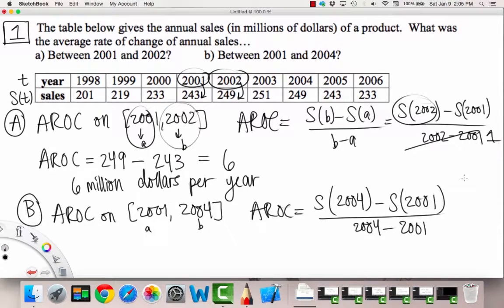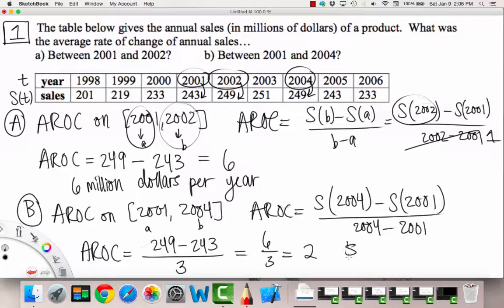So now we're going to reference our table for the top values. So S of 2004 is 249. So no new number there. But anyways, 249 minus, and then 2001 is still 243. That was the sales then. And then over, but this is a little different. 2004 minus 2001 is a three. So this is equal to six over three. So this equals two. So our answer for part B would be $2 million per year. Notice the red dollar sign here. $2 million per year. This was the average rate of change. It increased by that much.